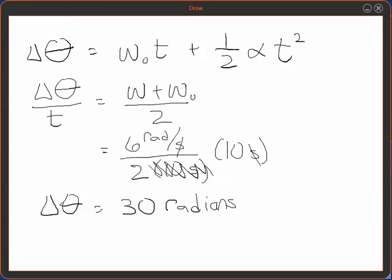If you want to figure out how many revolutions that is, you could do 30 radians and divide that by about 6 or 2 pi radians per revolution. How many revolutions was it? About 5. Cool, cool problem.